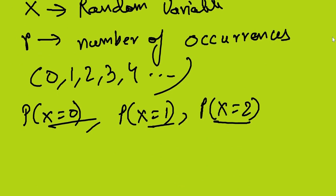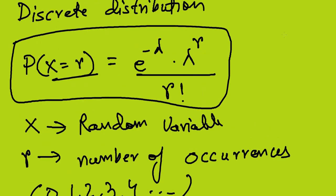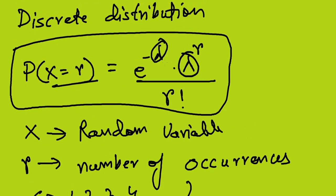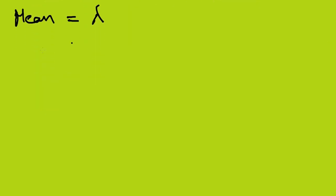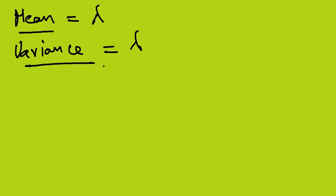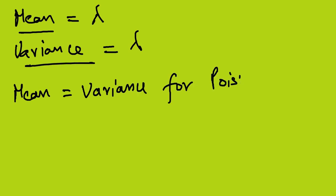The mean of the Poisson distribution equals lambda — the lambda appearing in the formula e^(-λ) * λ^r. The variance of the distribution is also lambda. So for a Poisson distribution, mean equals variance. This is a very important property.